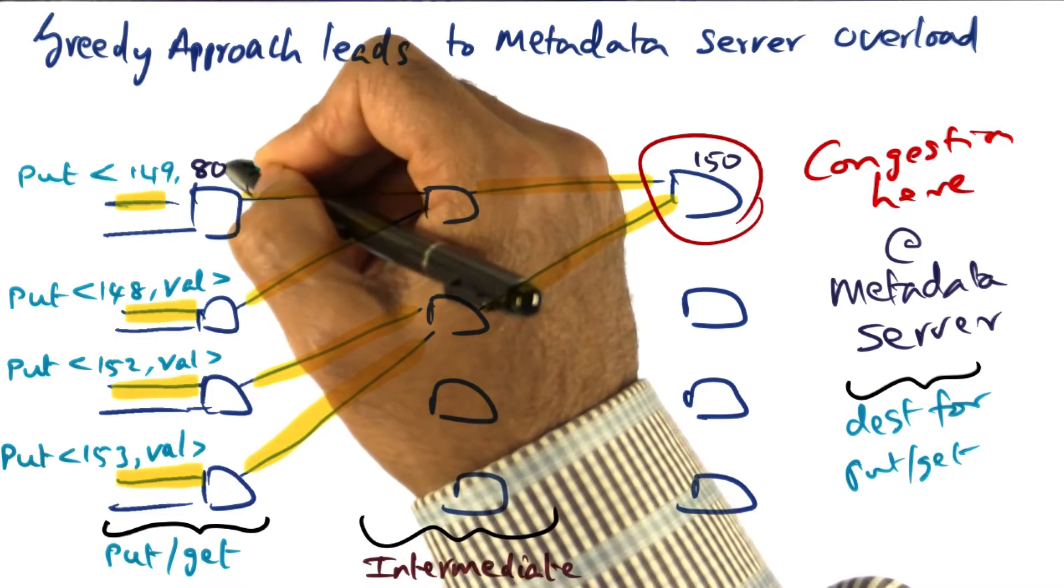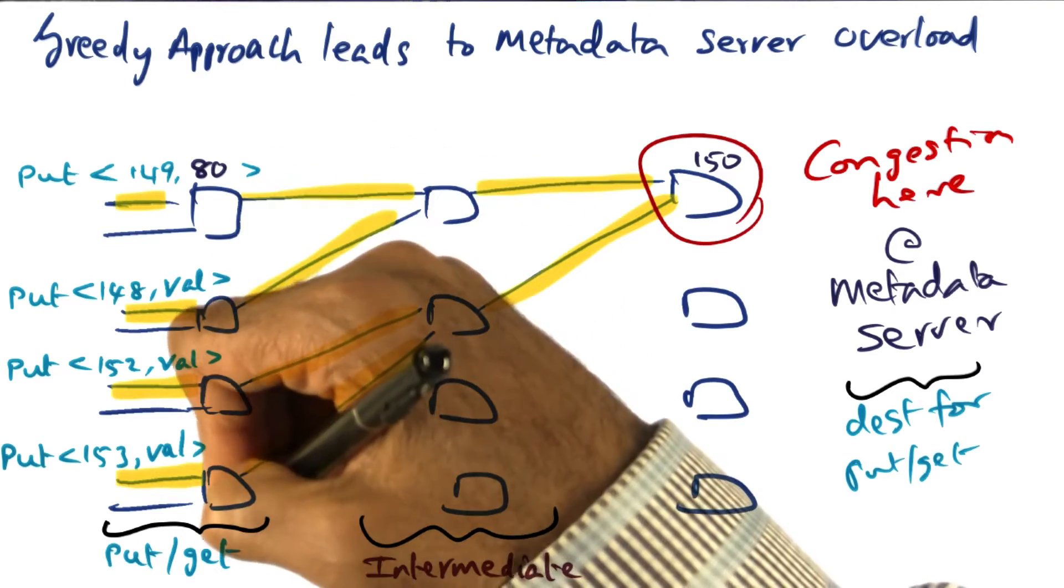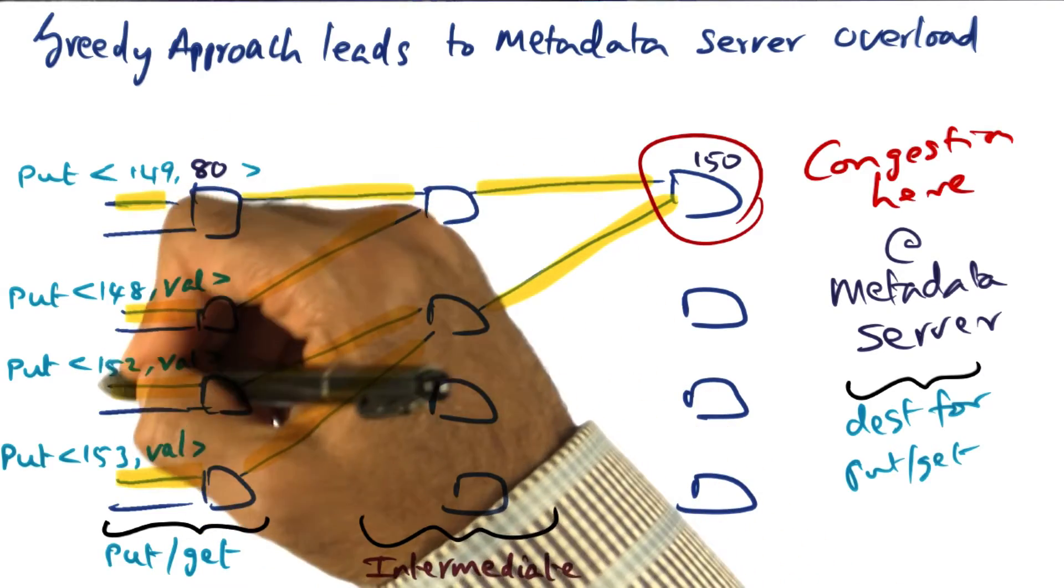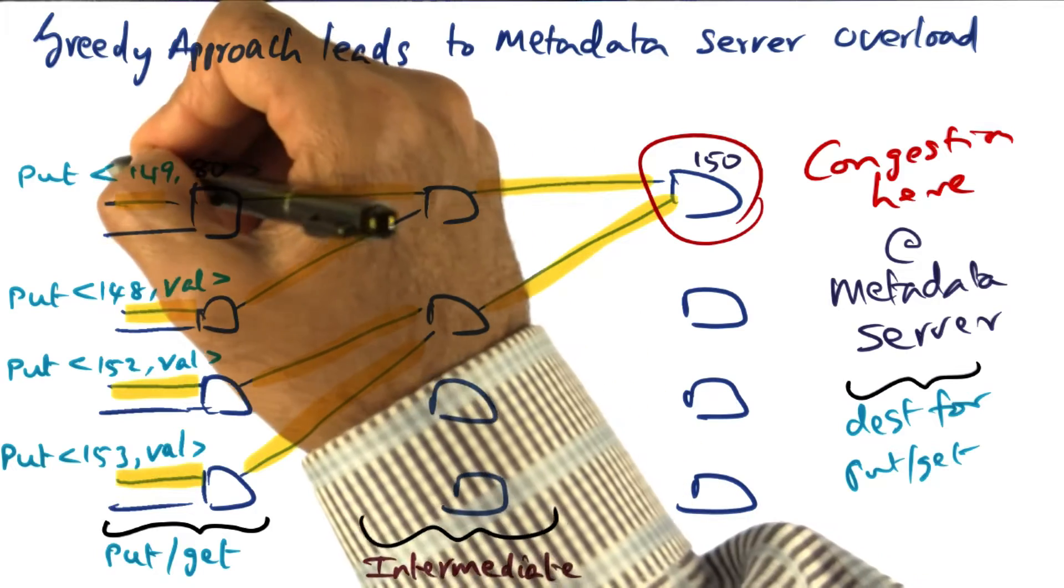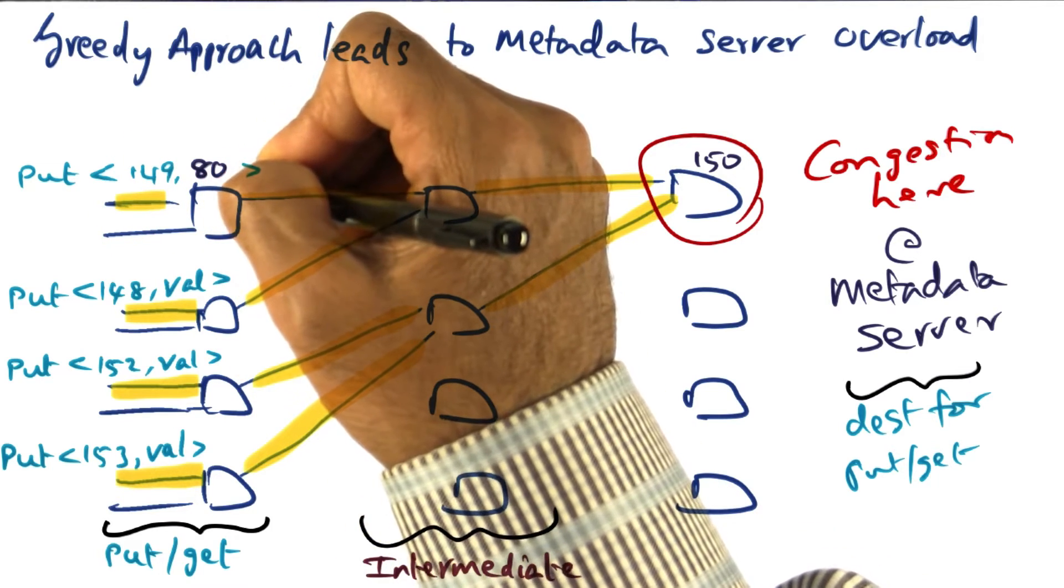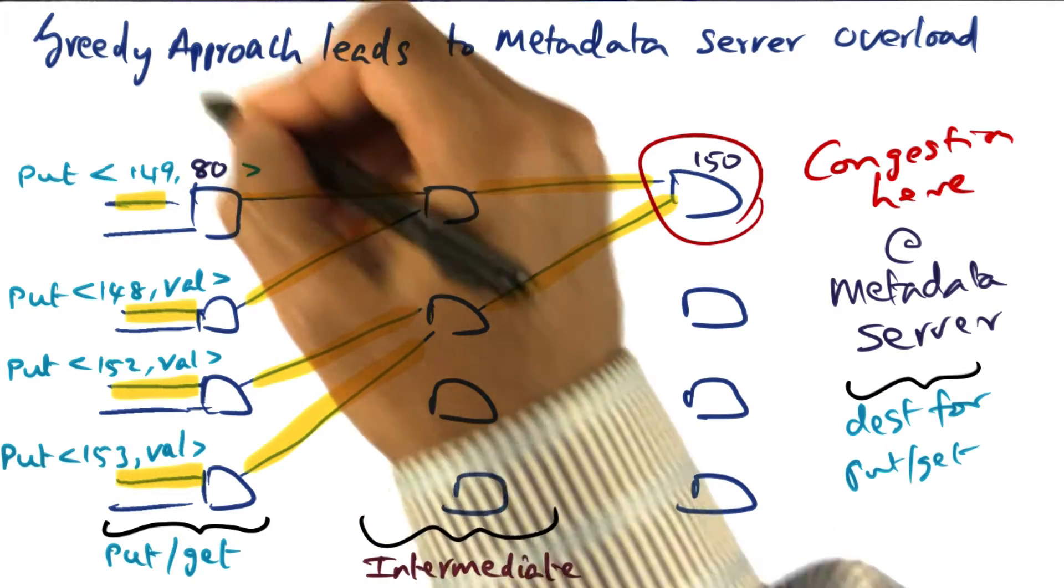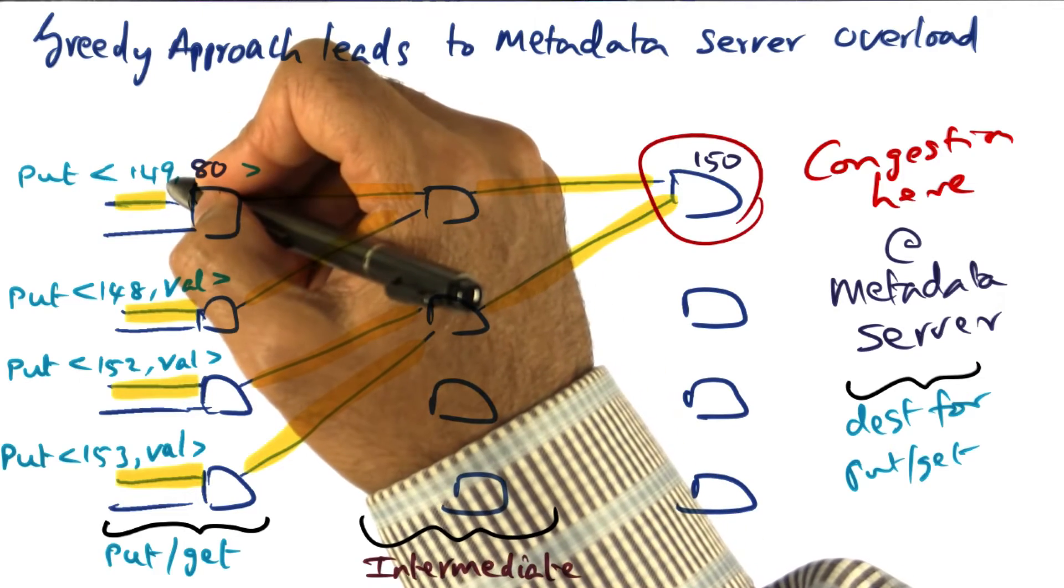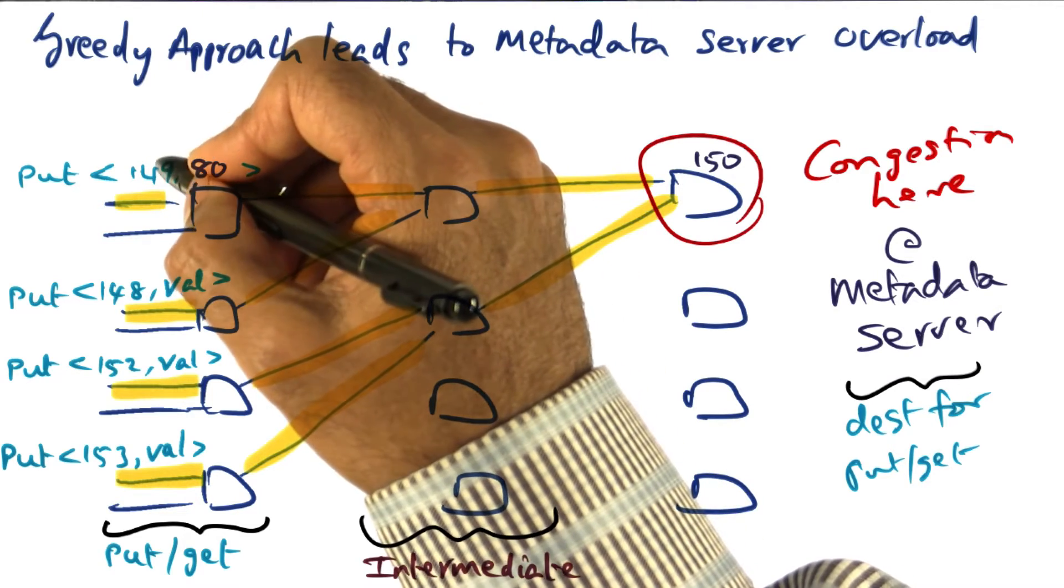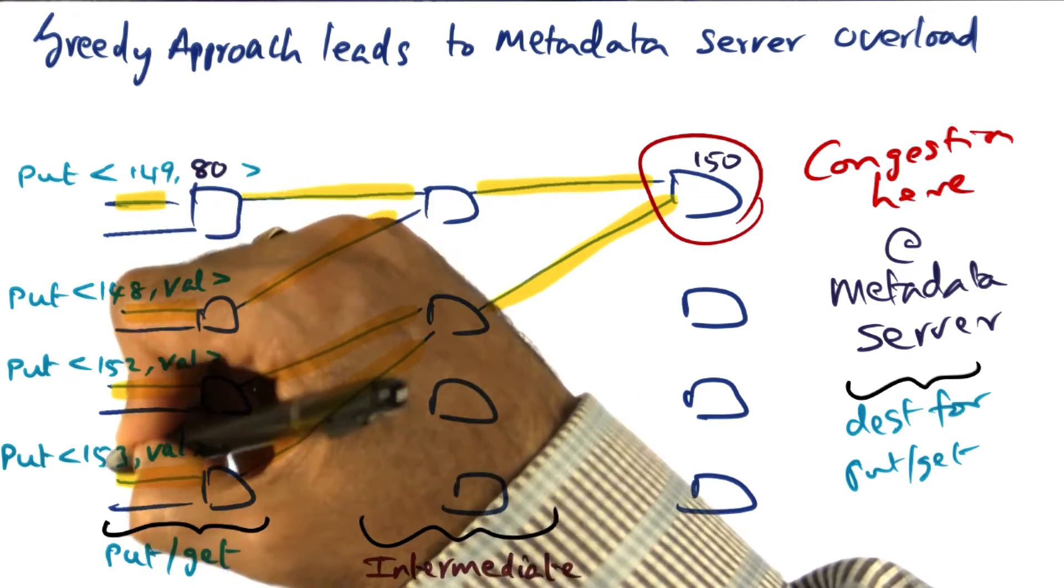This guy's node ID is 80. This guy's node ID is something else, something else, something else. And all of these guys want to keep the key-value pair. What will they do in terms of this greedy algorithm? Well, they'll try to find a node whose ID is closest to the key that they want to place.